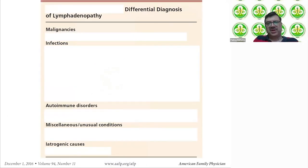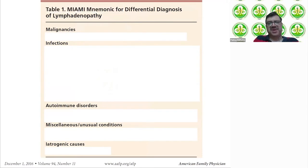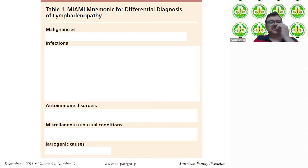If you want to remember these categories for exams, use the mnemonic MIAMI: M for malignancies, I for infections, A for autoimmune disorders, M again for miscellaneous or unusual conditions, and I for iatrogenics. Whatever diseases I have mentioned in the previous slide can be grouped into these categories.